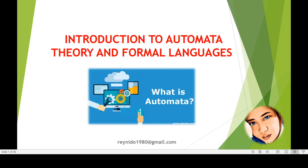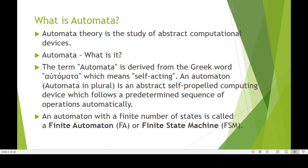Good day guys. Today we're going to discuss the introduction to automata theory and formal language. This is our lesson two for automata. Automata theory is a study of abstract computational devices. The word automata is derived from the Greek word automata, which means self-acting. An automaton is an abstract self-propelled computing device which follows a predetermined sequence of operations, also called a finite state machine or FA.